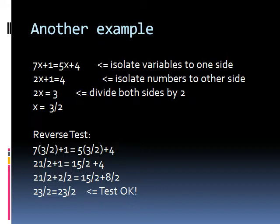So if you do the reverse test, just to prove that this is a valid solution, you would substitute x in the original equation with 3 over 2 to see if both sides of the equation equal each other. So if you do that, you would have 7 times 3 over 2 plus 1 equals 5 times 3 over 2 plus 4. Once you multiply that out, you would have 21 over 2 plus 1 equals 15 over 2 plus 4. If you have 1 equals 2 over 2 and 4 equals 8 over 2, because it's exactly the same thing, you would have 21 over 2 plus 2 over 2 equals 15 over 2 plus 8 over 2. If you add them up, you would have 23 over 2 equals 23 over 2. Since the right-hand side equals the left-hand side, you would know that the solution passes the reverse test.